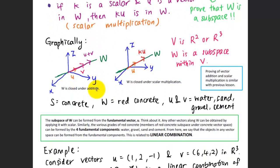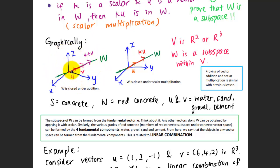Graphically, let's imagine that S is the concrete — the three-dimensional space here represents the concrete vector space — while W is the red concrete, a smaller group of members represented by a line. This line is a member of the three-dimensional space because it lies within it. Let u and v be the fundamental components: water, sand, gravel, and cement.